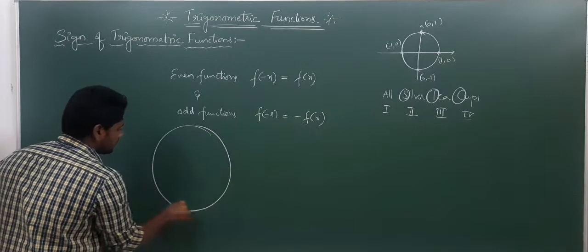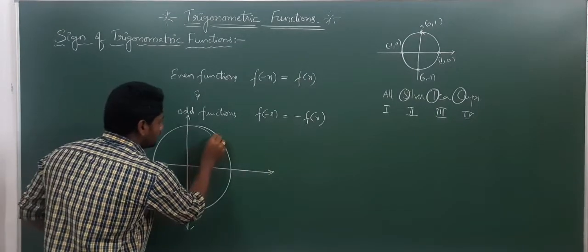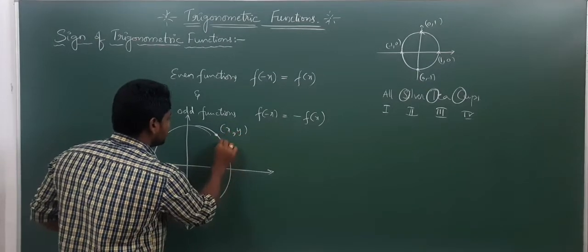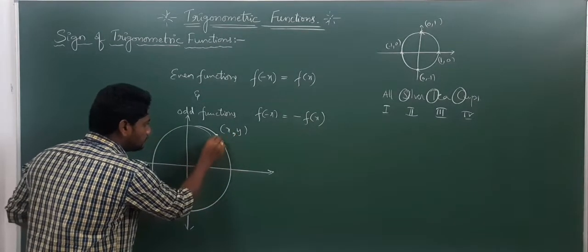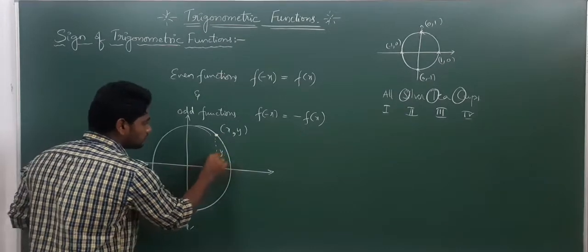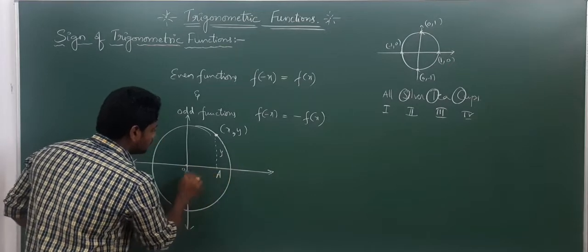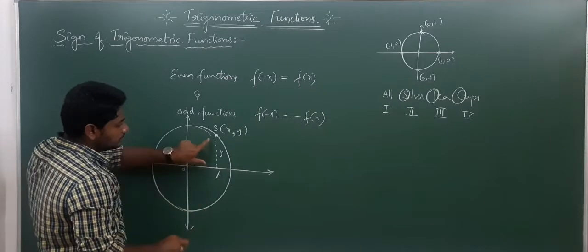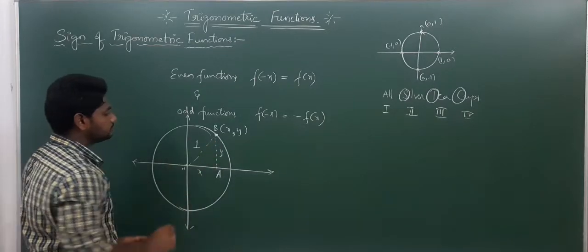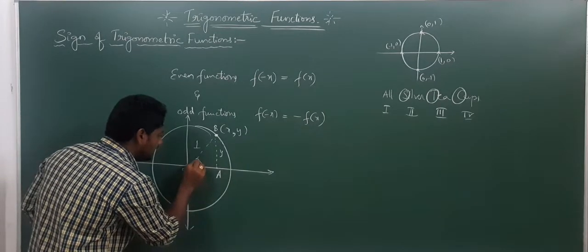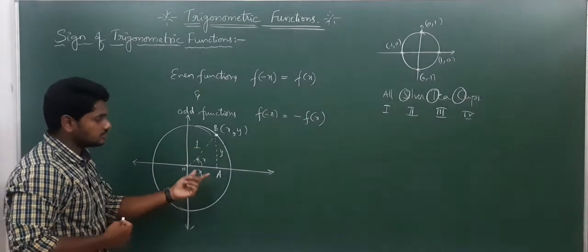To define this further, consider a unit circle. Take a coordinate point x comma y. If you draw a perpendicular from that point to the x-axis, the height will be y — the y-coordinate — and the horizontal distance to the point will be x. If the ray makes an angle x, this distance becomes x and this distance becomes y.